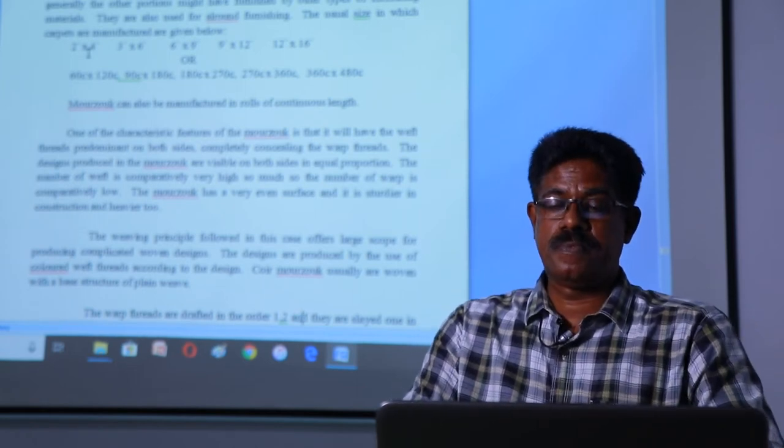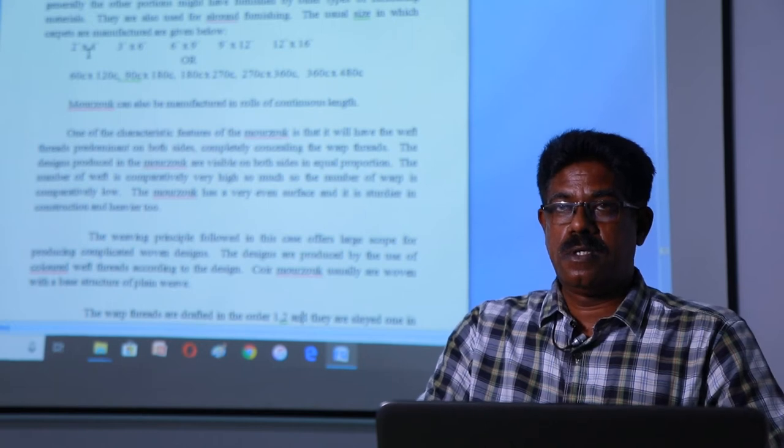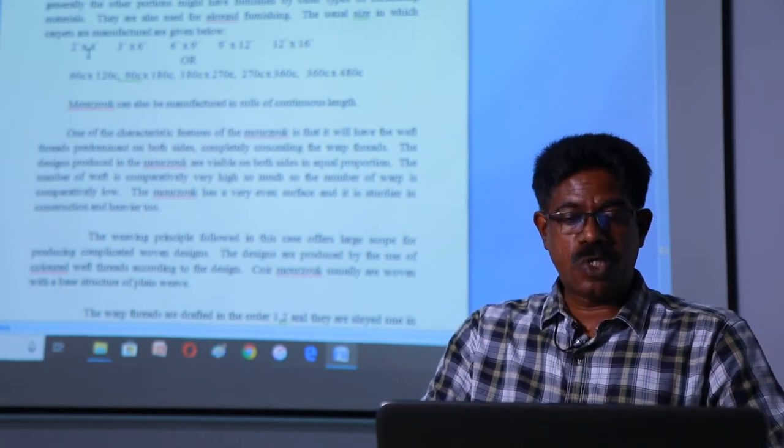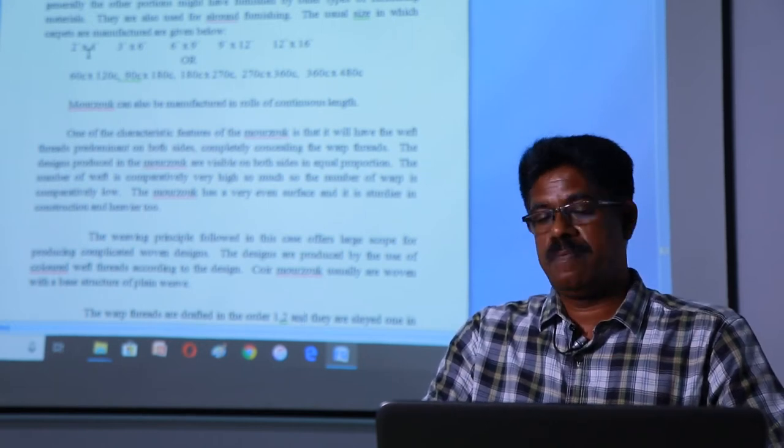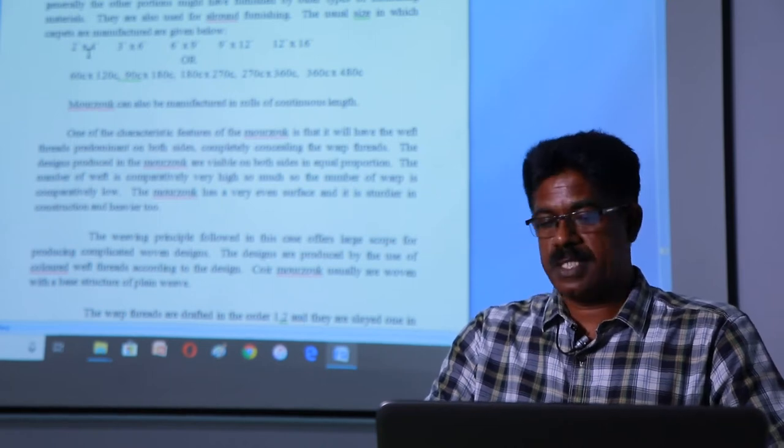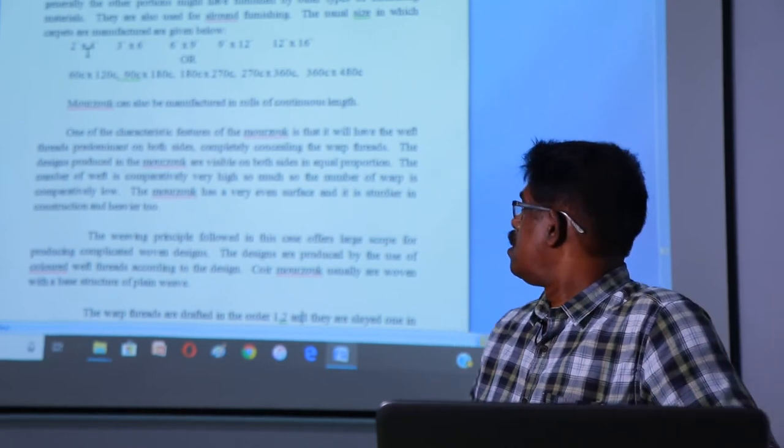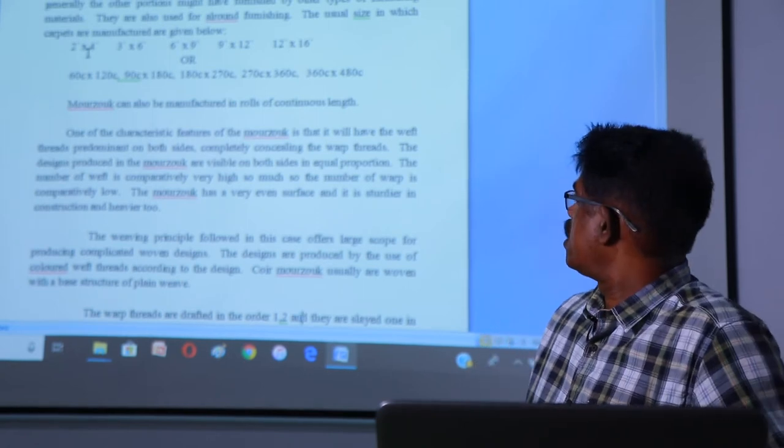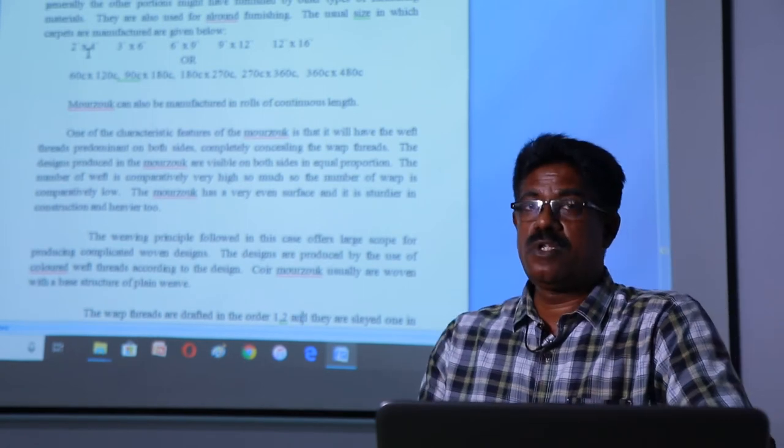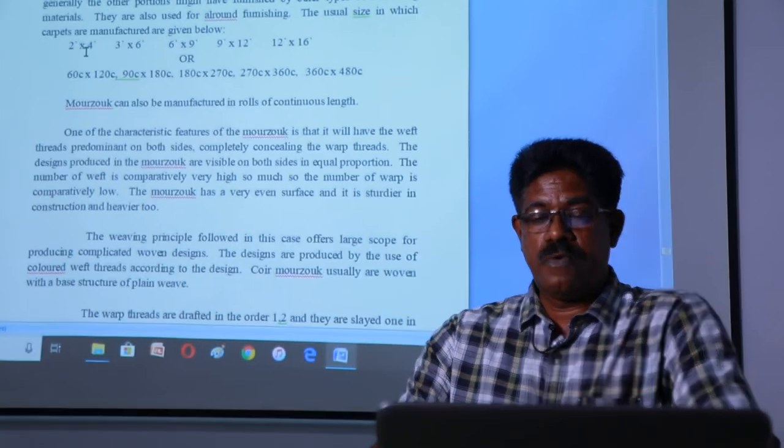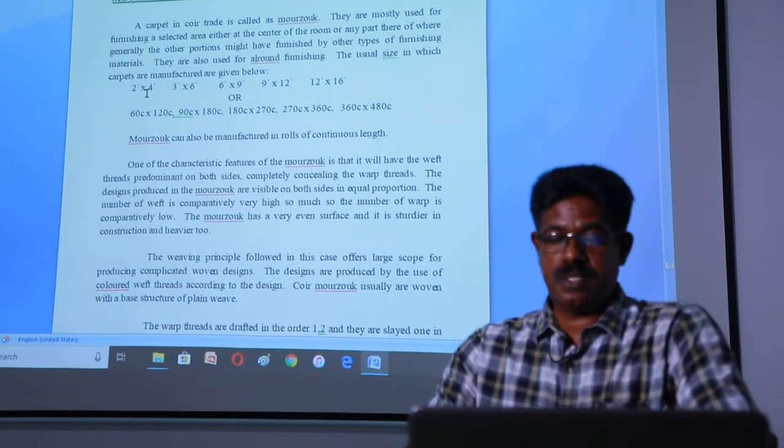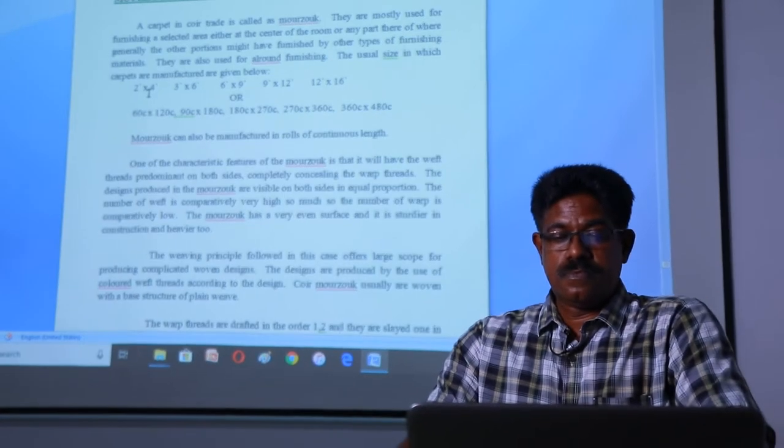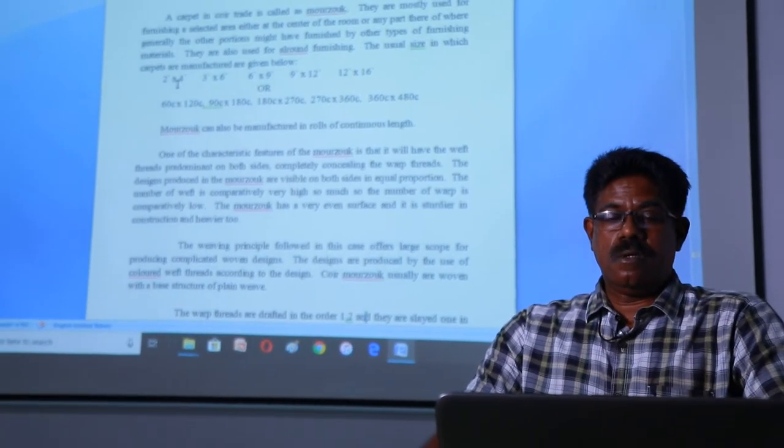The marsuks are usually manufactured in number sizes. Generally, 2 feet to 4 feet, 3 feet into 6 feet, 6 feet into 9 feet, 9 feet into 12 feet, and 12 feet into 16 feet. The marsuk can also be manufactured in rolls of continuous length.